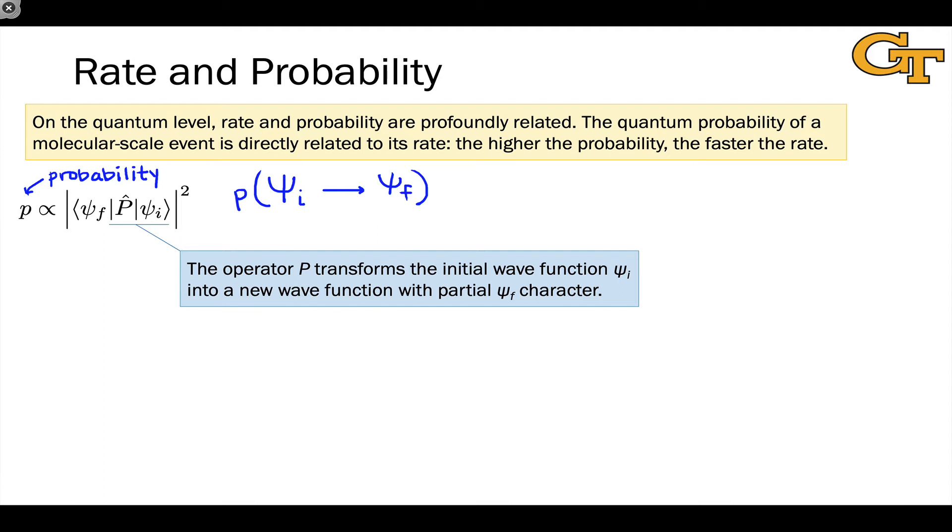In the language of quantum mechanics, ψ_i, when operated on by P, can collapse to ψ_f with some probability. When we talk about ψ_f character, the initial wave function operated on by P picks up some ψ_f character, and that gives this transition some probability of taking place.